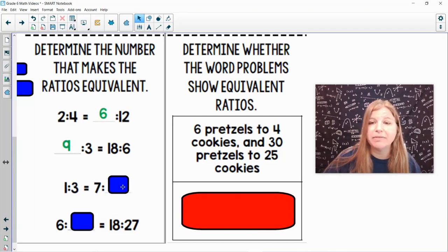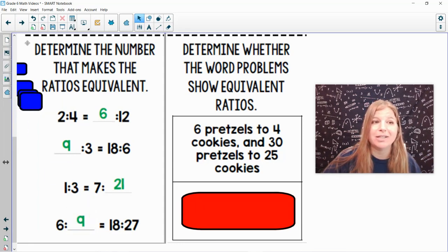Next one. 1 to 3 is equal to 7 to what? 1 times 7 is 7. So 3 times 7 is 21. 6 to blank equals 18 to 27. 6 times what is 18? 3. So what times 3 would get me 27? 9. Awesome.